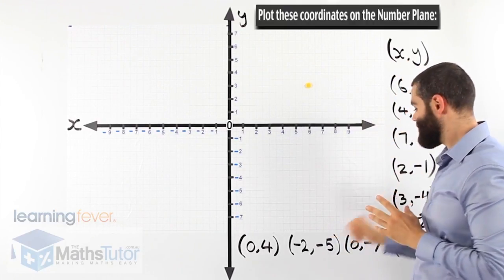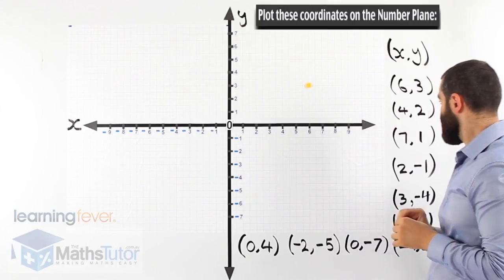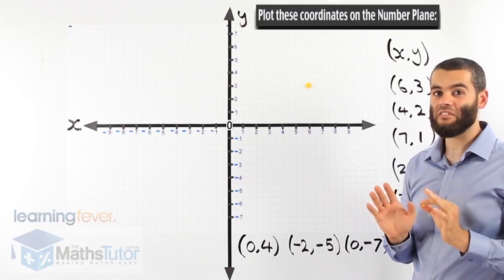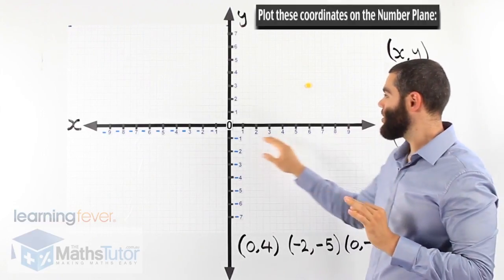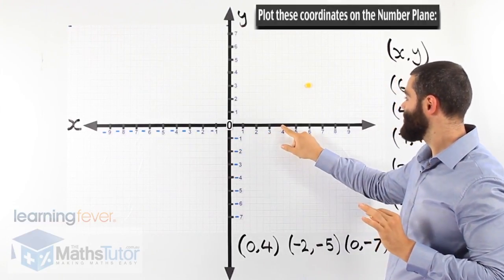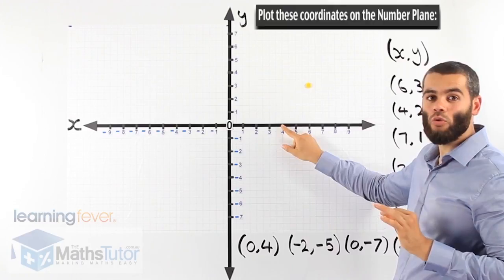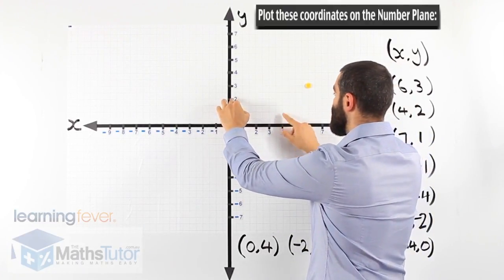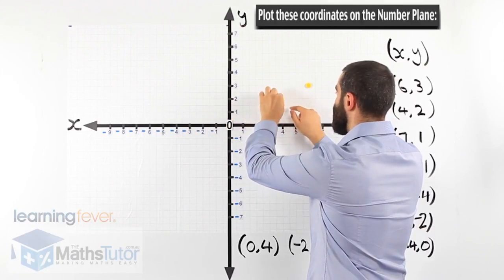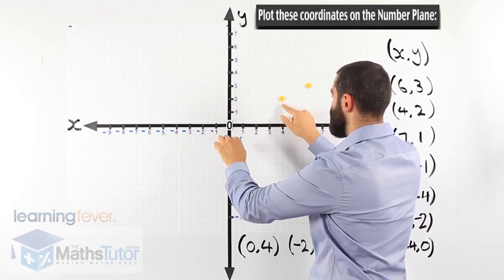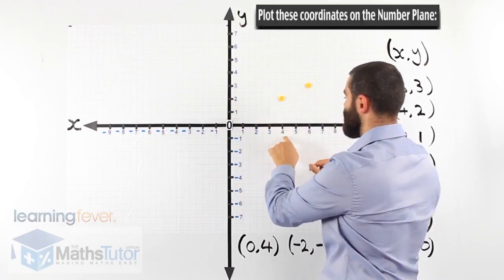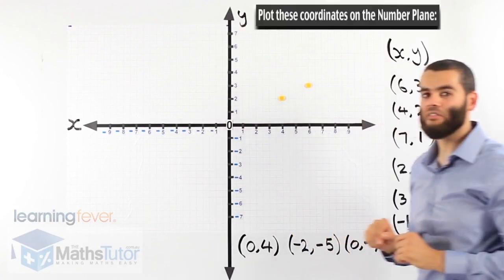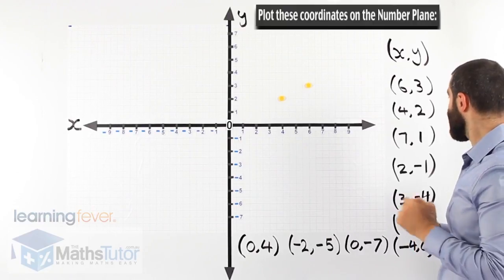Another one: (4, 2). We always start with the x-axis, so 4 on the x-axis — there it is. And 2 on the y-axis — there it is. So 4 and 2, they meet right there. 4 from the x and 2 on the y-axis, they meet right there.